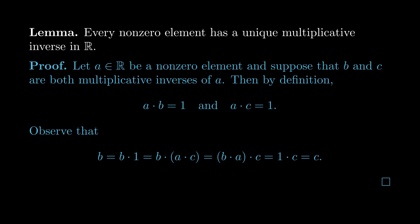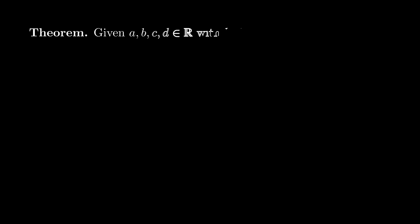Now using these two lemmas, let's prove that multiplying fractions works as expected. In symbols, we need to show that given real numbers a, b, c, and d, with b and d not equal to 0, that (a/b) × (c/d) = ac/bd.